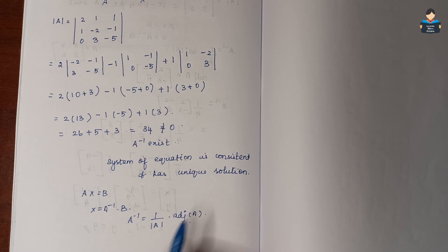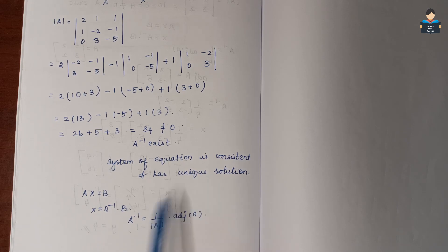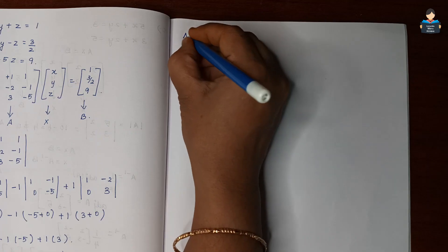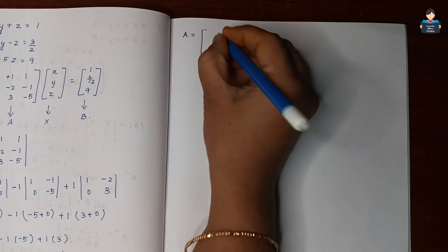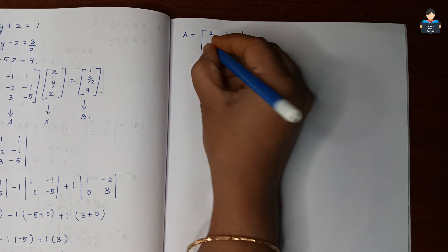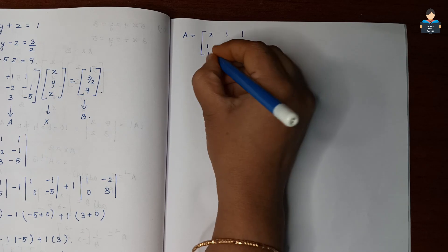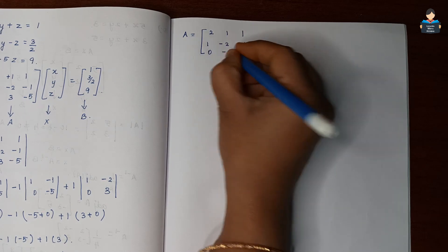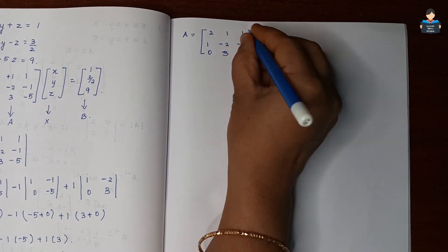For the 3×3 matrix A = [2, 1, 1; 1, -2, -1; 0, 3, -5], we find the minors and cofactors. We start by computing the minor M11: eliminate row 1 and column 1 to get the submatrix [-2, -1; 3, -5].